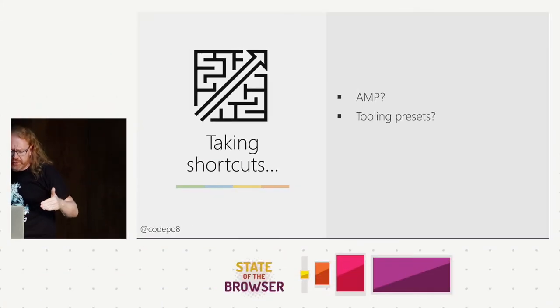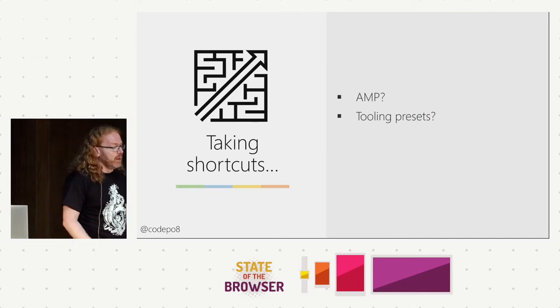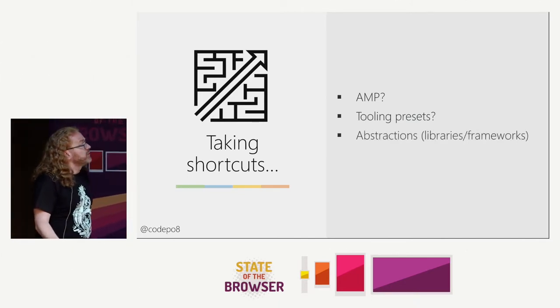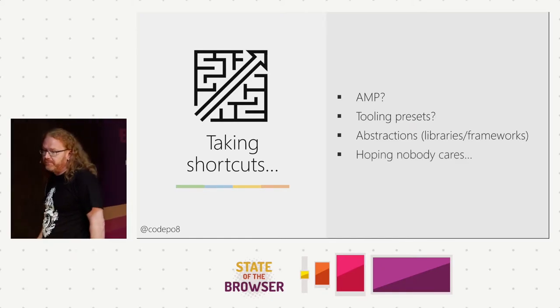Tooling presets are another issue. A build script creates 5,000 things, does tree-shaking and code-splitting, but it's still a 2-megabyte overhead for a diff that says 'hello world.' Making a tool without a preset is really hard because people don't want to spend time customizing it. Abstractions, libraries, frameworks — and hoping nobody cares is another big thing: if it runs fast on your boss's computer, who cares about end users?